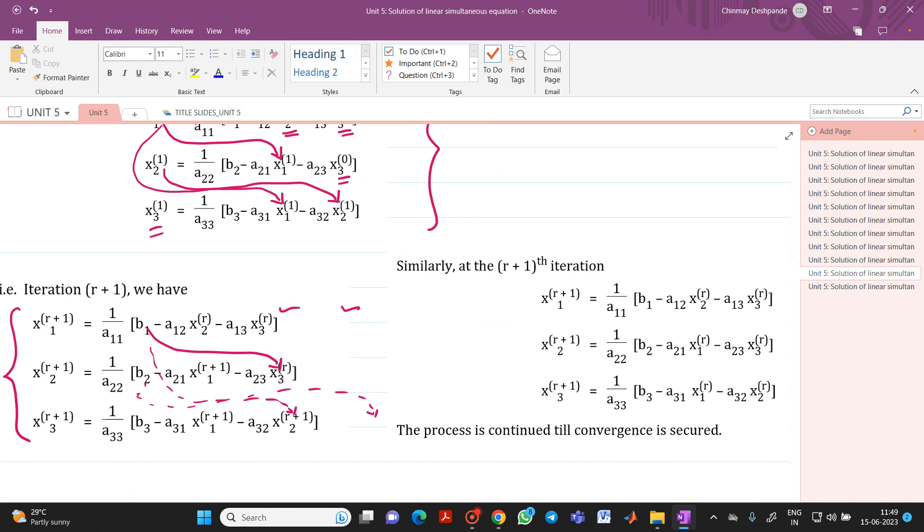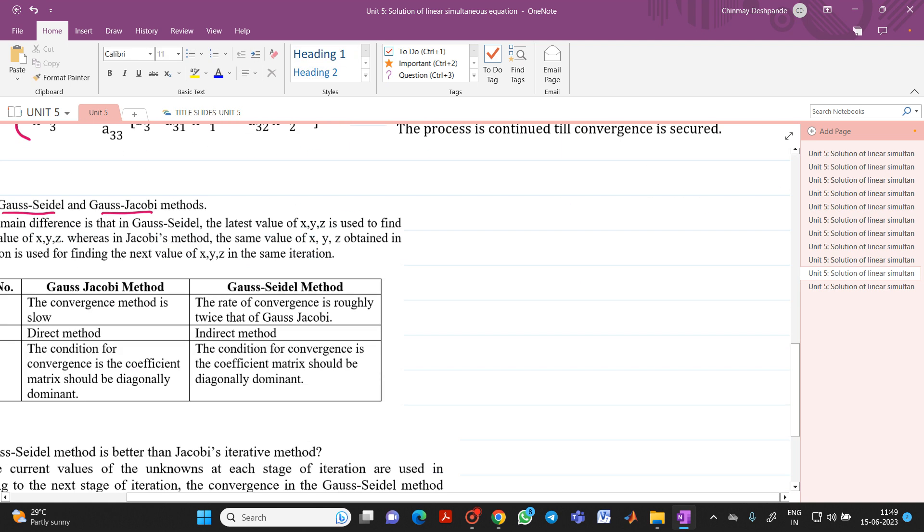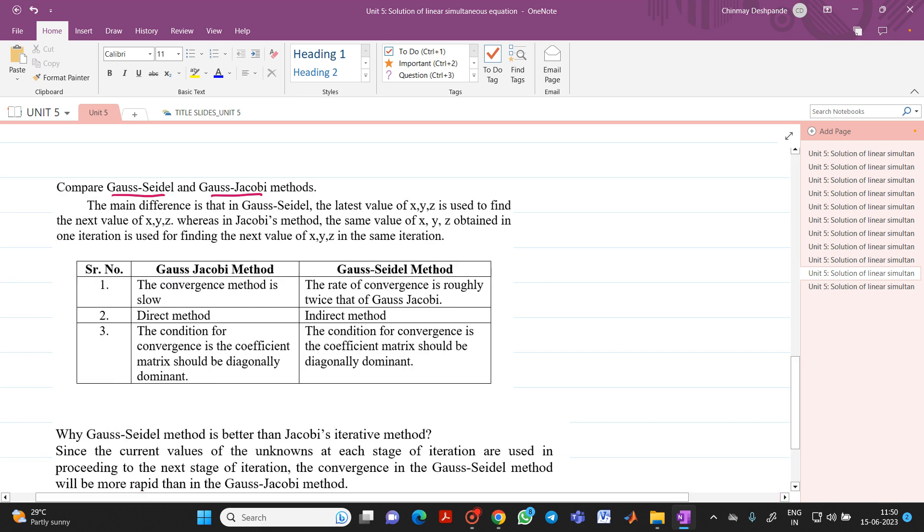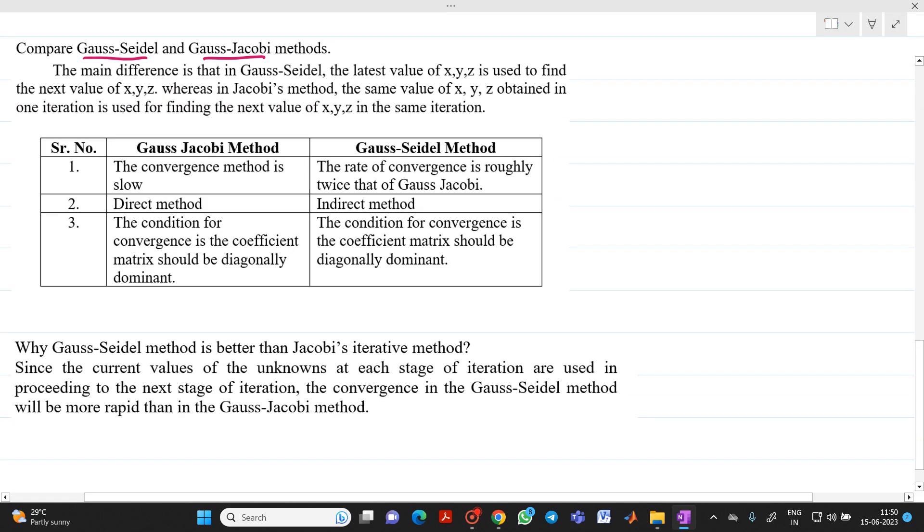So if you see this is nothing but your Gauss-Seidel equation that we have discussed right now. And this is nothing but your Gauss-Jacobi equation. If you see, here we are using r, r throughout. You can take r equal to 0. So here you will get x1 of 1, x2 of 1, x3 of 1. But in case of your Gauss-Seidel method, whatever answer we are getting here in the first, we are using it in the next equation. So if you compare these two, what kind of comparison is there, what you will observe here.